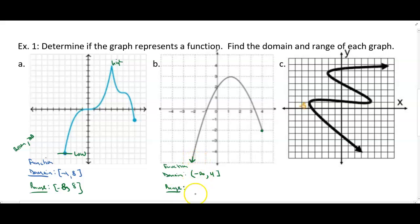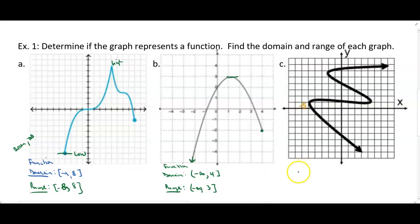For the range, since the graph goes down forever it starts at negative infinity, and it goes all the way up to a highest y-value of 3. Since 3 is included on the graph we use a square bracket. Always remember: the range is the lowest and highest y-value.